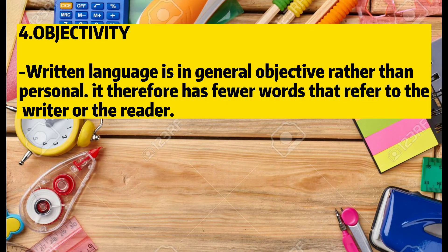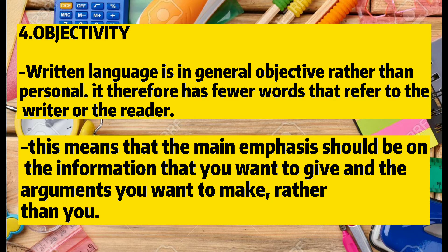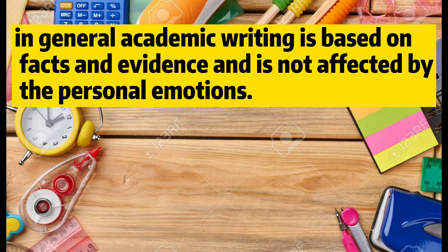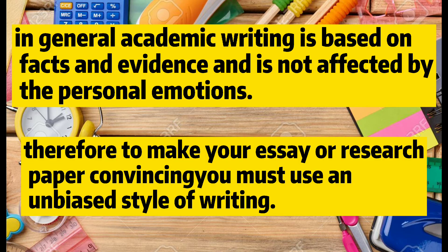Four: Objectivity. Written language is in general objective rather than personal. It therefore has fewer words that refer to the writer or the reader. The main emphasis should be on the information that you want to give and the arguments you want to make, rather than on you. Academic writing tends to use nouns and adjectives rather than verbs and adverbs. In general, academic writing is based on facts and evidence and is not affected by personal emotions.